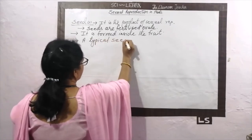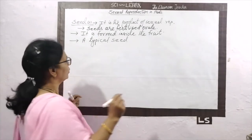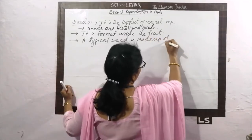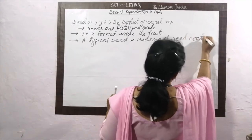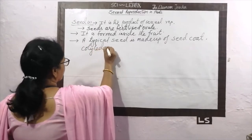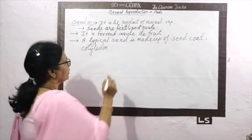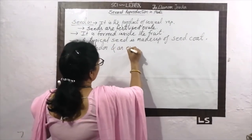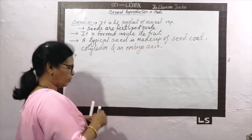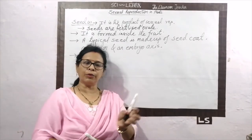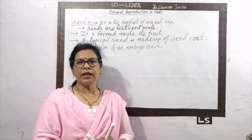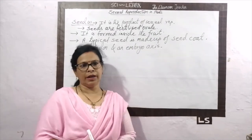A typical seed is made up of three important parts. First is the seed coat — the outer covering. Second is cotyledon — cotyledon is actually the stored food which helps to germinate. Third is the embryonal axis. So a typical seed consists of seed coat, the high protecting layer present outside; inside the seed coat, cotyledon is present; and inside the cotyledon, the embryonal axis.